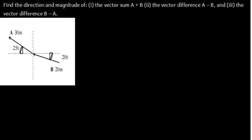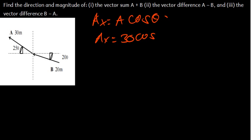To resolve vector A into its X component, AX is going to be A·cos(θ). Our A is 30. Now which angle do we use? Remember, when we talk about vectors, we measure angles from the positive X axis. We have been given 25 degrees, so the angle from the positive X axis is 180 minus 25, which gives us 155 degrees. So we use 155 degrees.